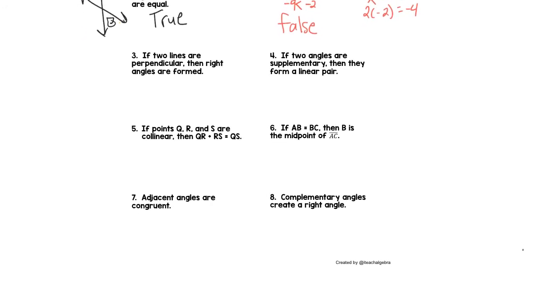If two lines are perpendicular, then right angles are formed. Well, that is indeed the definition of perpendicular angles. That means they're right angles. This one is true. If two angles are supplementary, then they form a linear pair. I'm going to think back to your definitions of supplementary angles. Supplementary angles can be a linear pair, but this is false because supplementary angles can be not adjacent. They can still equal 180 degrees and be supplementary, but they're not adjacent. So they do not have to be adjacent.